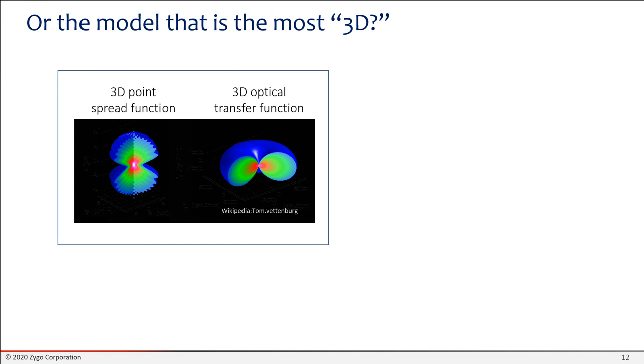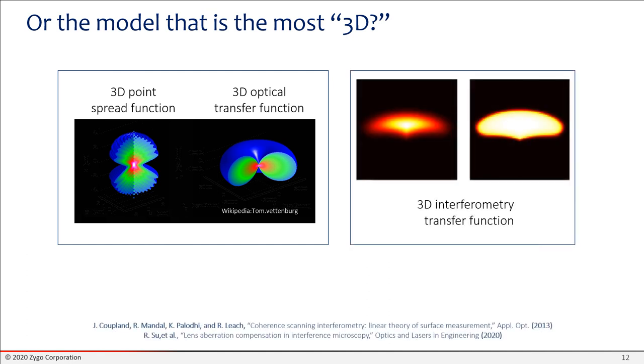Maybe it's the model that has the most 3D aspect. After all, it is a 3D problem. We're looking at surface structures and topography. So that's an XYZ structure. We should probably come up with a model that is 3D inherently. And this has been done a lot in microscopy. A lot of microscope imaging is volumetric. And so getting the three-dimensional point spread function and the corresponding three-dimensional optical transfer function is very important in microscopy. In recent years, these types of ideas have been extended to interferometry, including by our collaborators at the University of Nottingham, at Loughborough in the UK, and elsewhere.